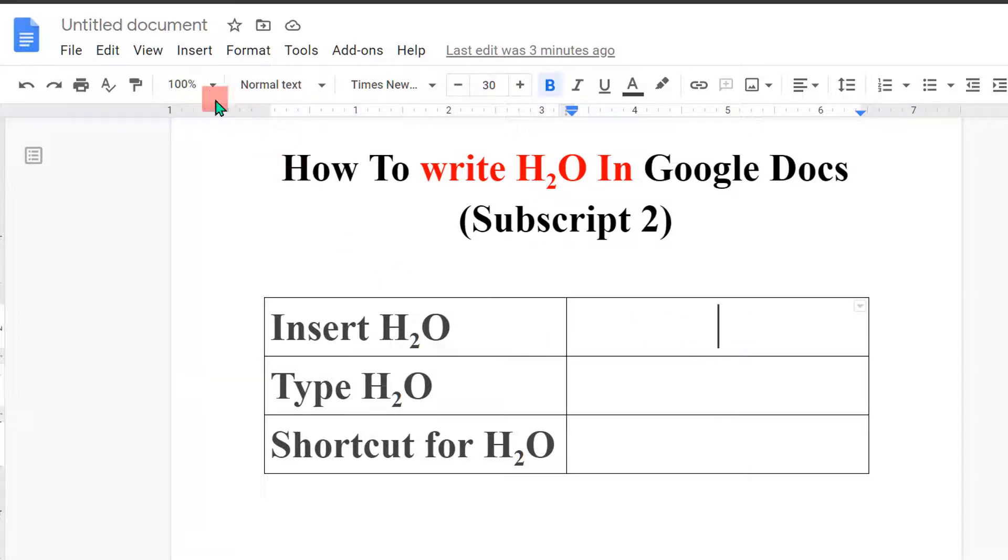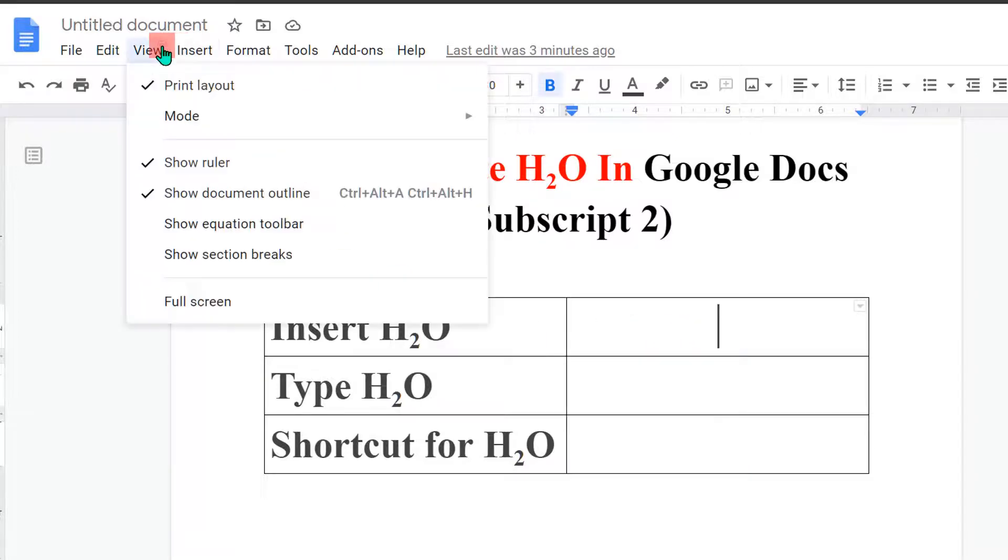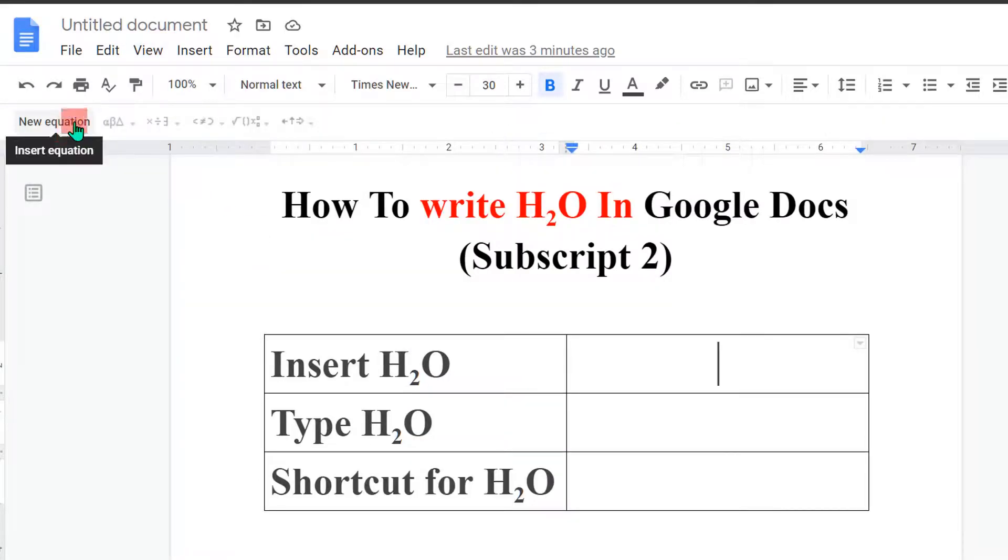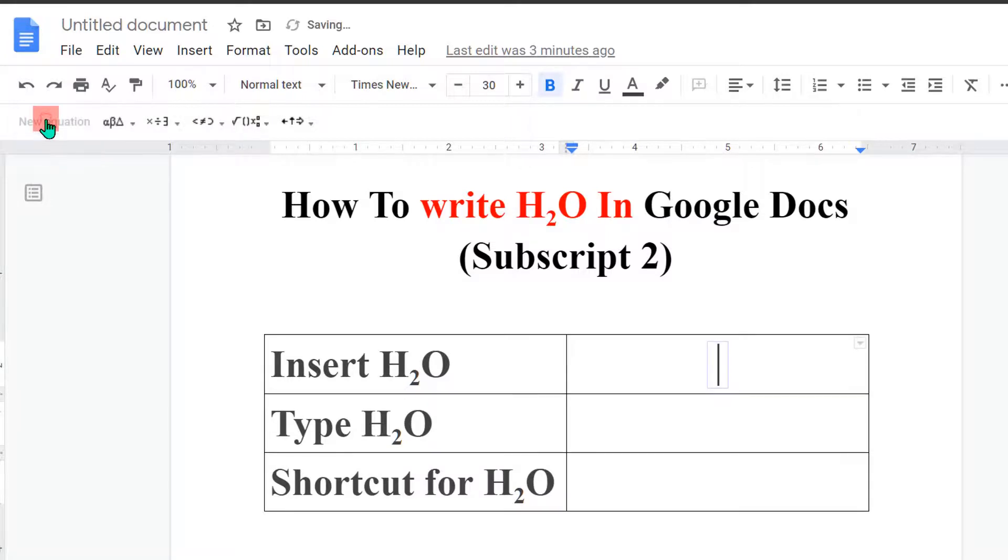To insert H2O, go to the View option, and under the View option, click on Show Equation Toolbar. You will see this equation toolbar. Now click on New Equation.